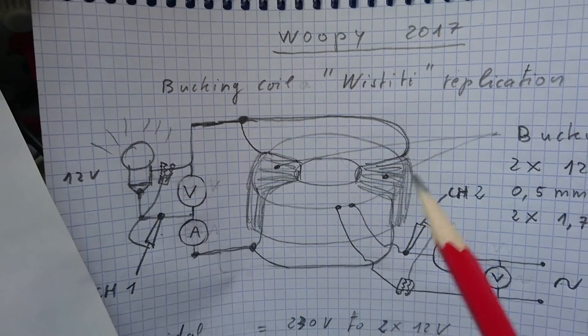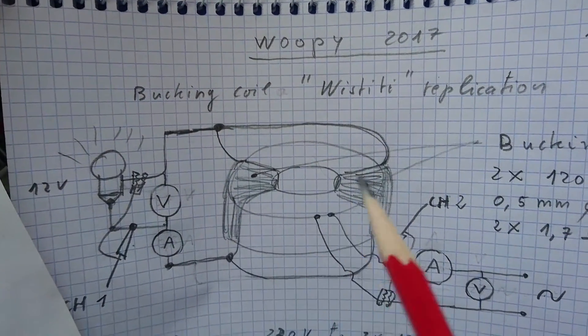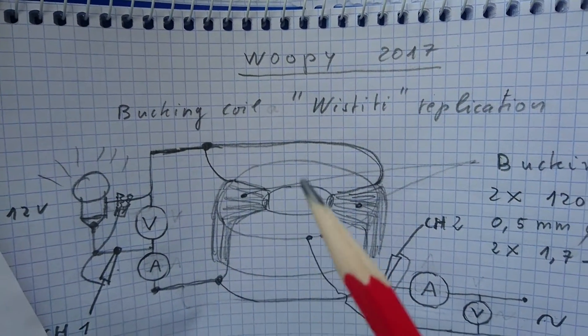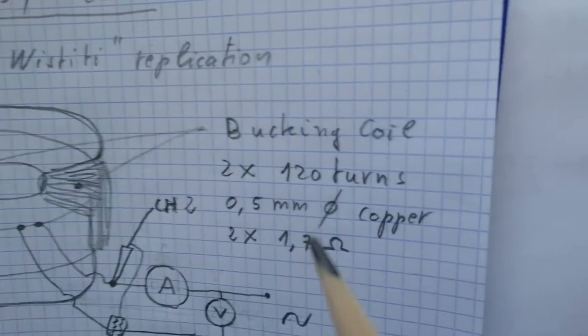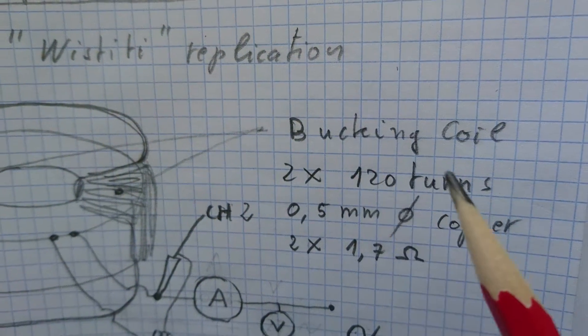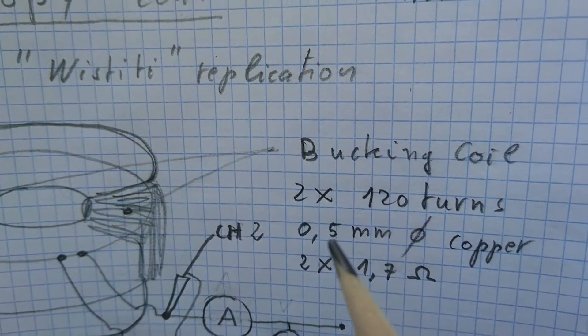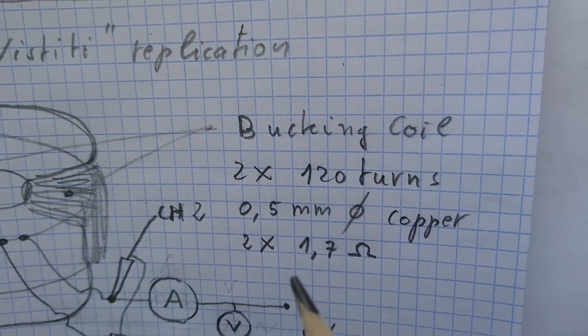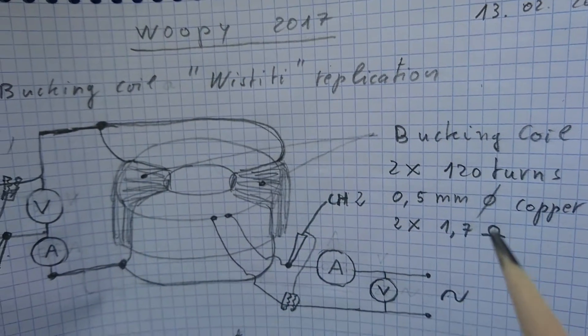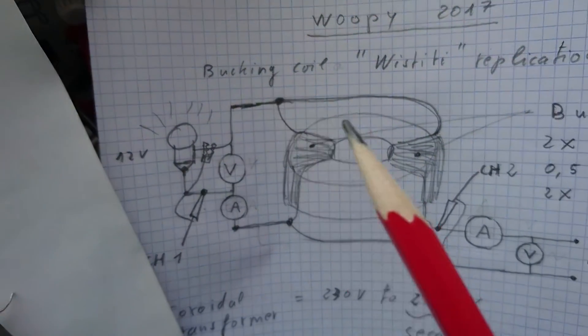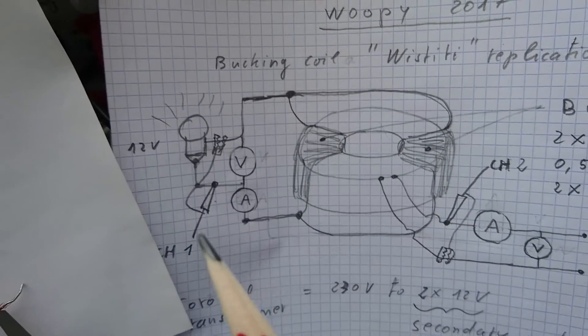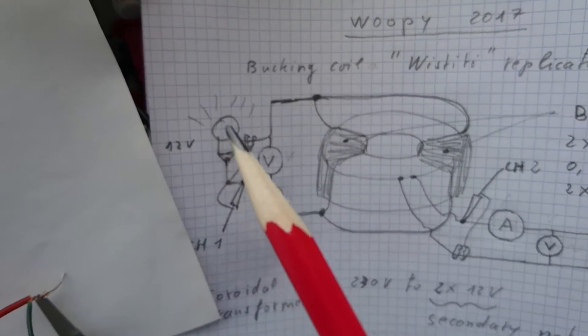Around this toroidal transformer I wound two coils in bucking effect. These two coils are 120 turns per coil, 0.5 millimeter copper wire, and each coil is 1.7 ohms DC resistance. At the end, these two coils are connected together in parallel and they go to a 12-volt incandescent bulb. You see it works.